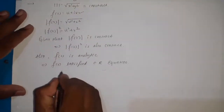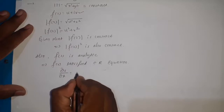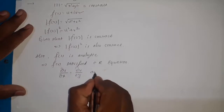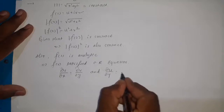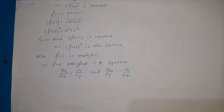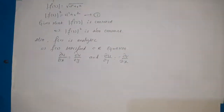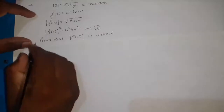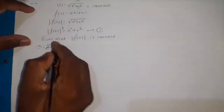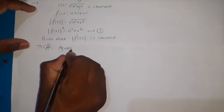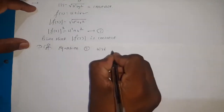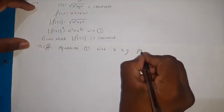The CR equations are: ∂u/∂x = ∂v/∂y, and ∂u/∂y = −∂v/∂x. These are the CR equations.